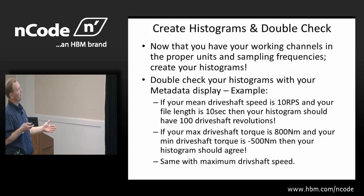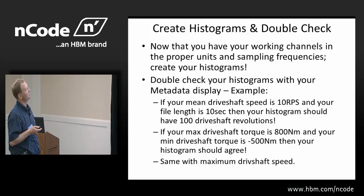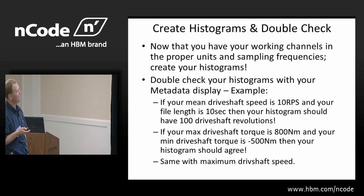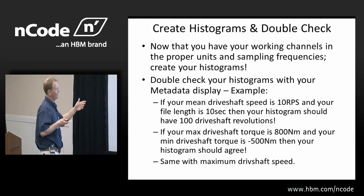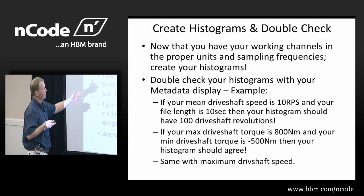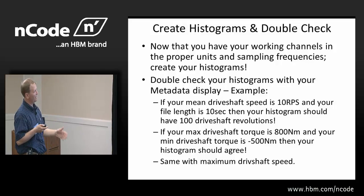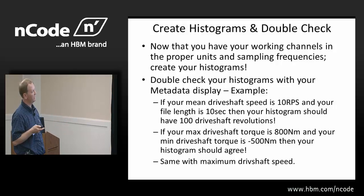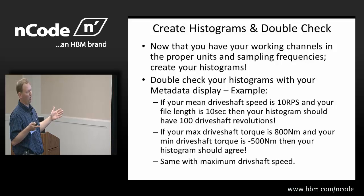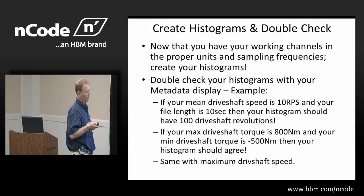Now I'm confident with my data. Next I create histograms and double check them. I have my working channels, my proper units, and I know my sampling frequency. I create my histogram and double check it with my metadata display. For example, if I know my mean drive shaft speed is 10 revolutions per second, and I know the length of my time series is 10 seconds, there should be 100 drive shaft revolutions. So when I export the CSB histogram from Glyphworks into Excel, there should be 100 drive shaft revolutions. I know my max and min torque, so I know what values my histogram ends at on the torque X-axis.